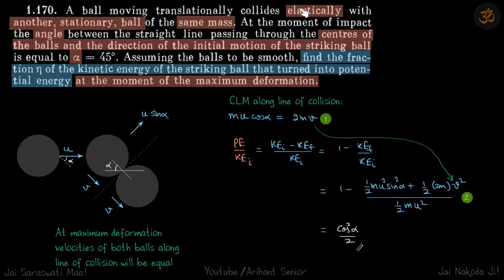A ball collides elastically with a stationary ball of same mass. It's given that angle of impact is alpha. We need to find the fraction of kinetic energy of the striking ball that turned into potential energy at the moment of the maximum deformation.